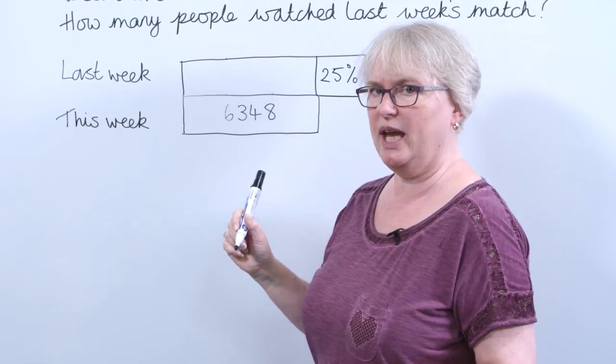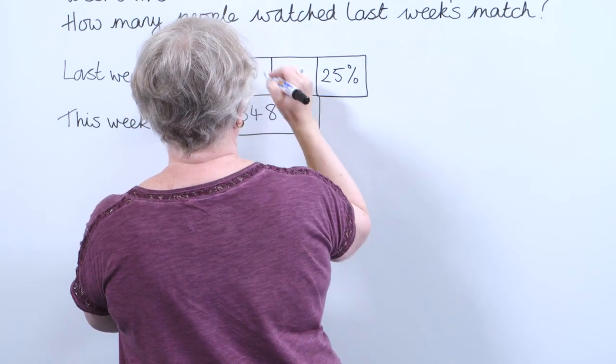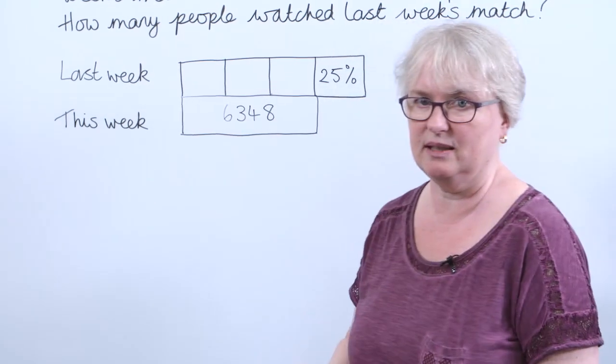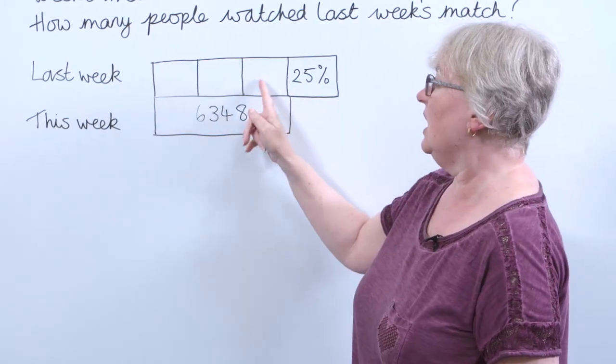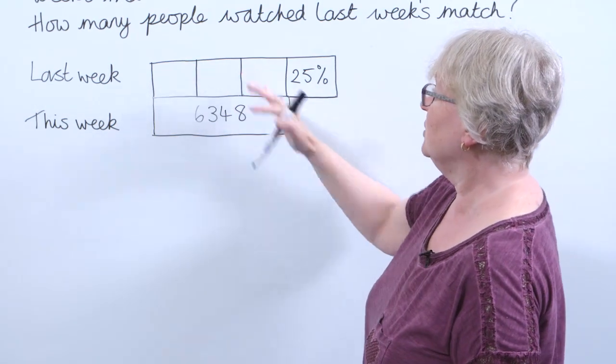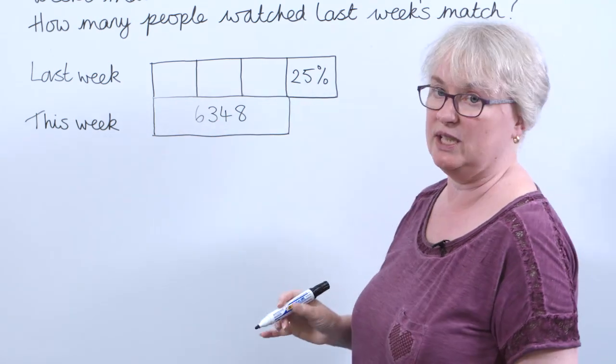So I'm going to check that I've done that accurately by drawing in the other 25%. So that's 50%, 75%, 100%. Now you can see quite clearly that I have got 75% of last week is the same as 6,348 fans.